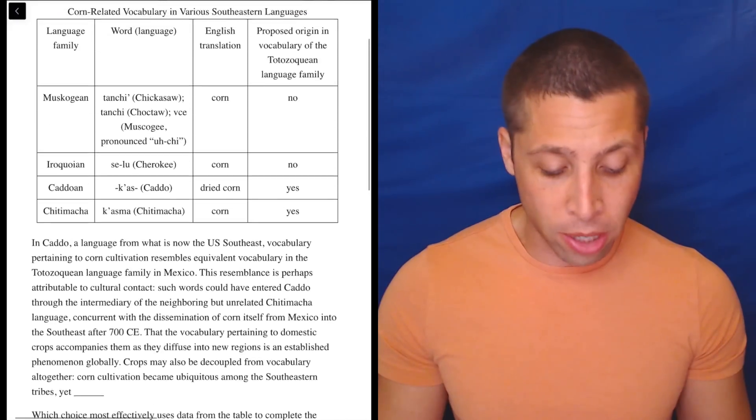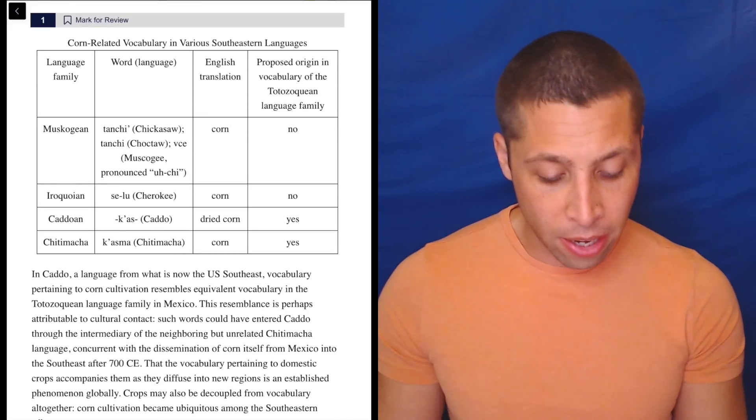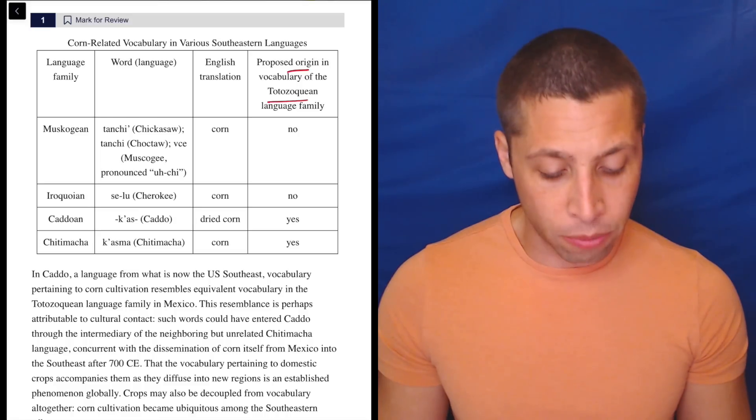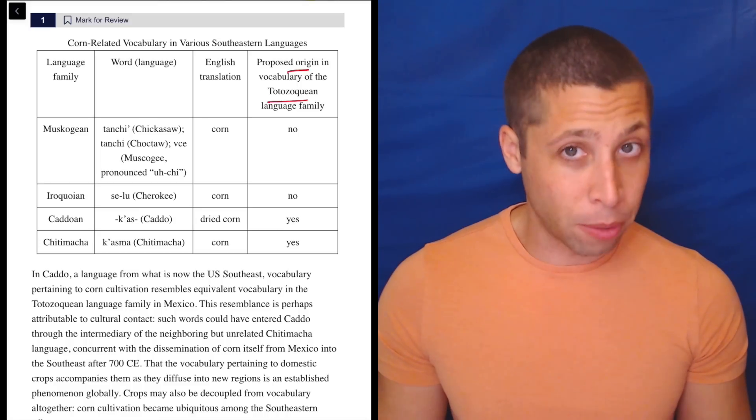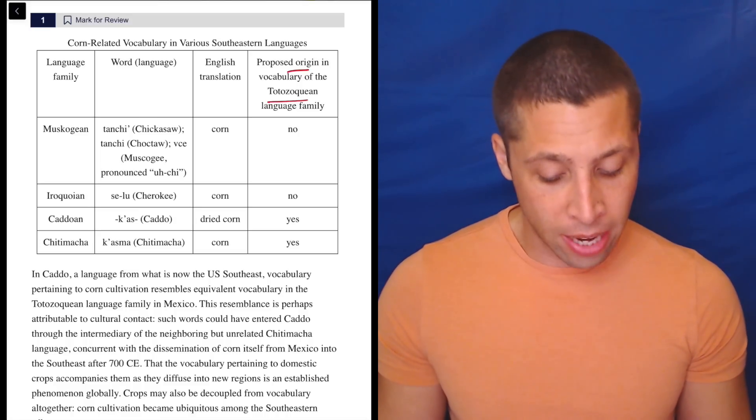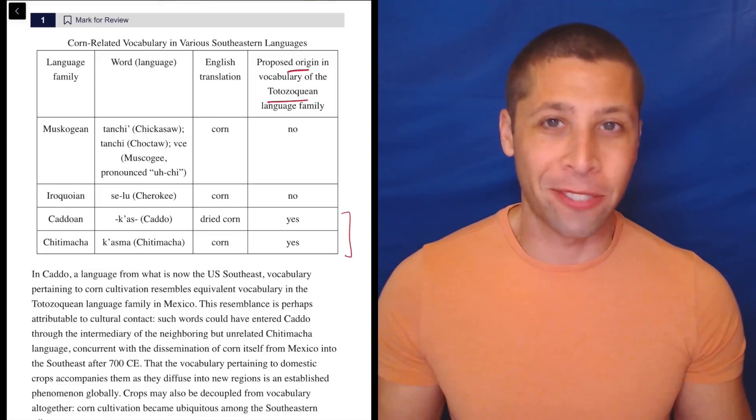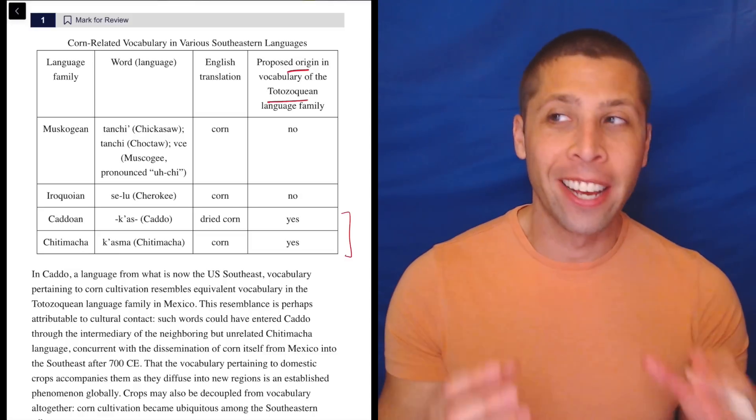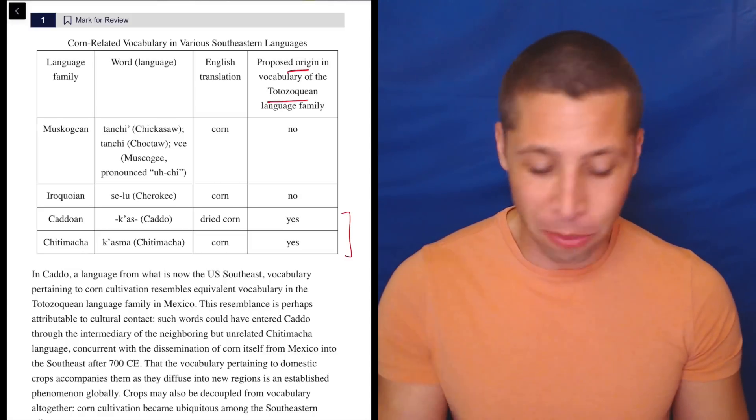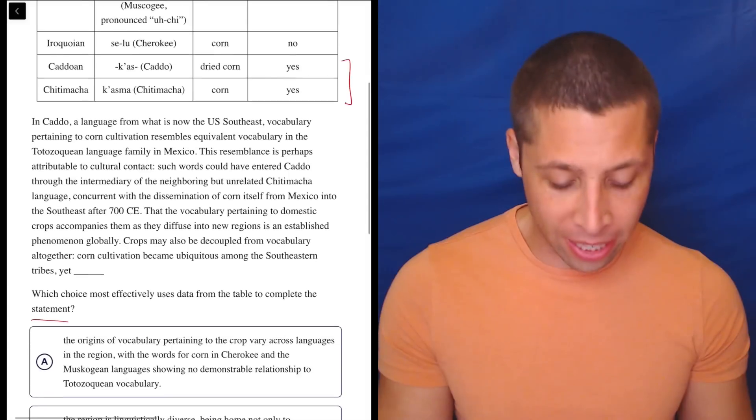Now, just to pause there for a second, if I wanted to, I can go up here and be like, okay, here is the origin of the corn word. Based on this other language, they talked about Cado and Chitimacha, and both of them say that it's from the corn language. So it's just repeating information that's very clearly in the chart, just a yes-no column. I'm not really saying anything important here.